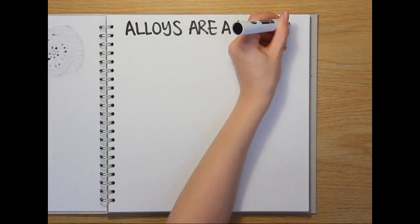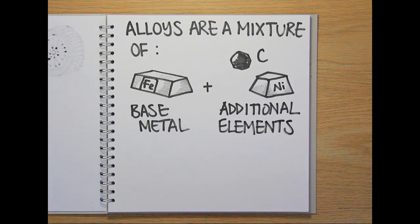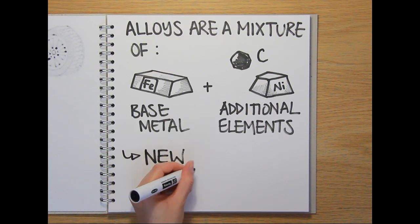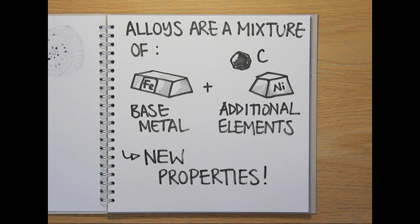Alloys are essentially mixtures of a base metal and one or more additional elements. Combining metals like this produces a material with very different properties to the individual metals on their own.